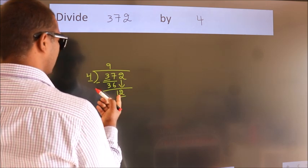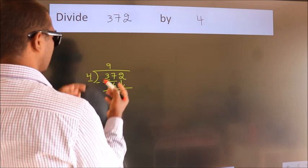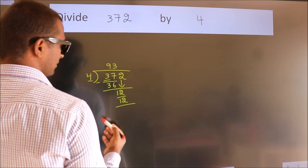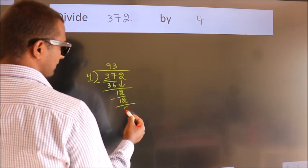When do we get 12 in the 4 table? 4 times 3 is 12. Now we subtract and get 0.